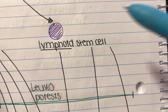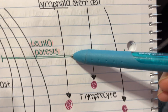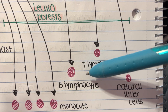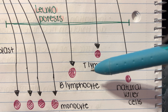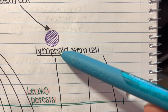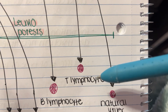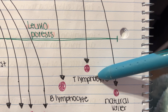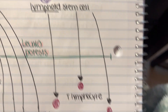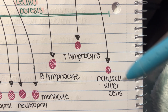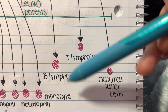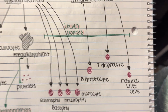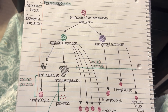The lymphoid stem cell can create three types of cells: a B lymphocyte, a T lymphocyte, and natural killer cells. You just have to memorize those. All three are white blood cells.